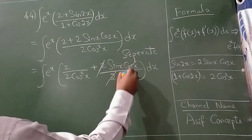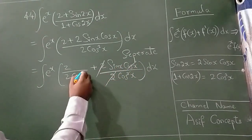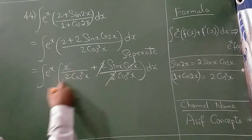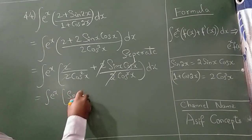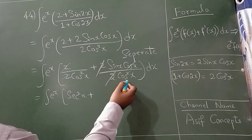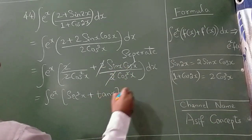2 and 2 get cancelled, cos and 1 cos get cancelled, 2 and 2 get cancelled. 1 divided by cos is secant square x. What is remaining? Sine and 1 cos is remaining. Sine by cos is tan.